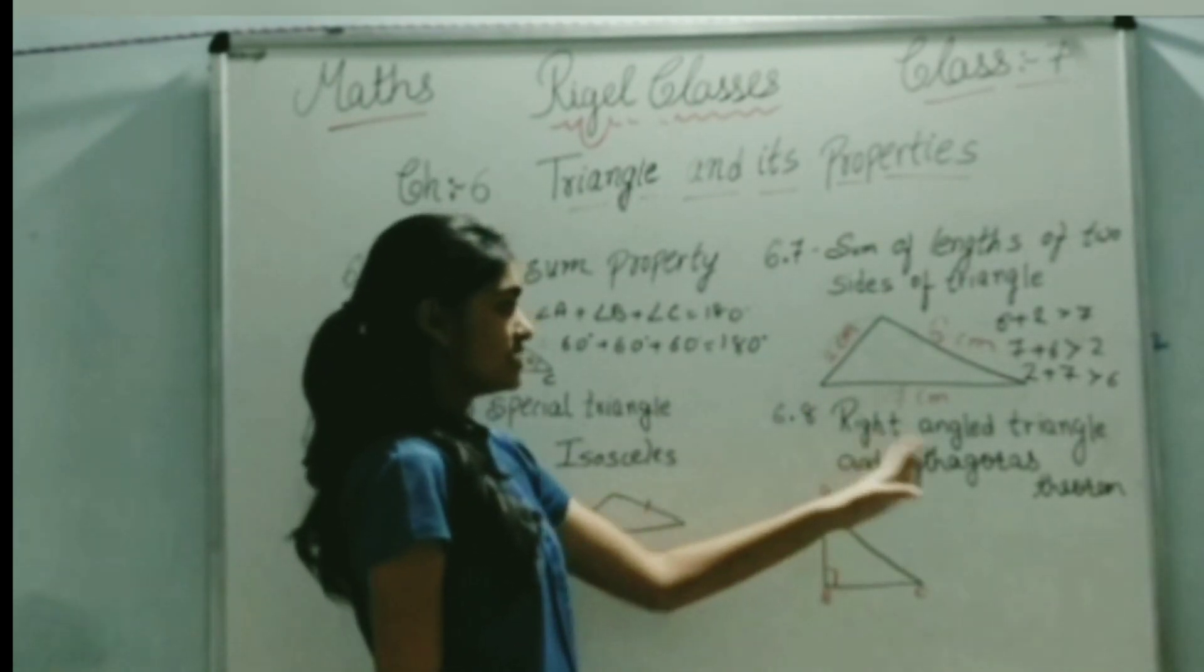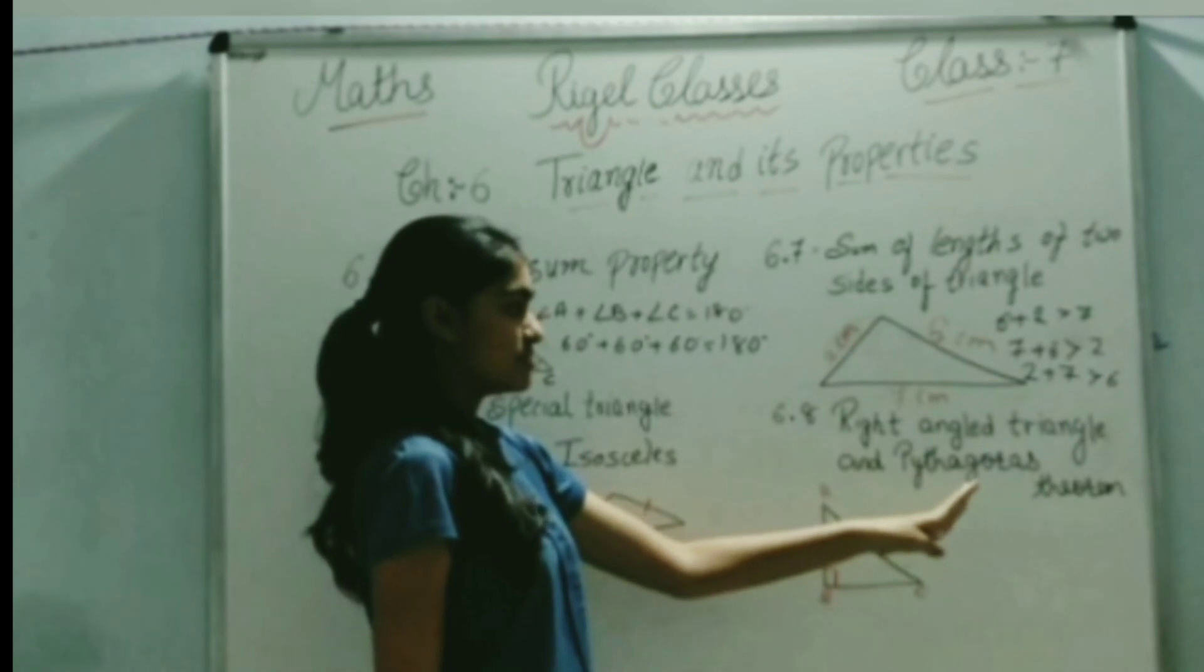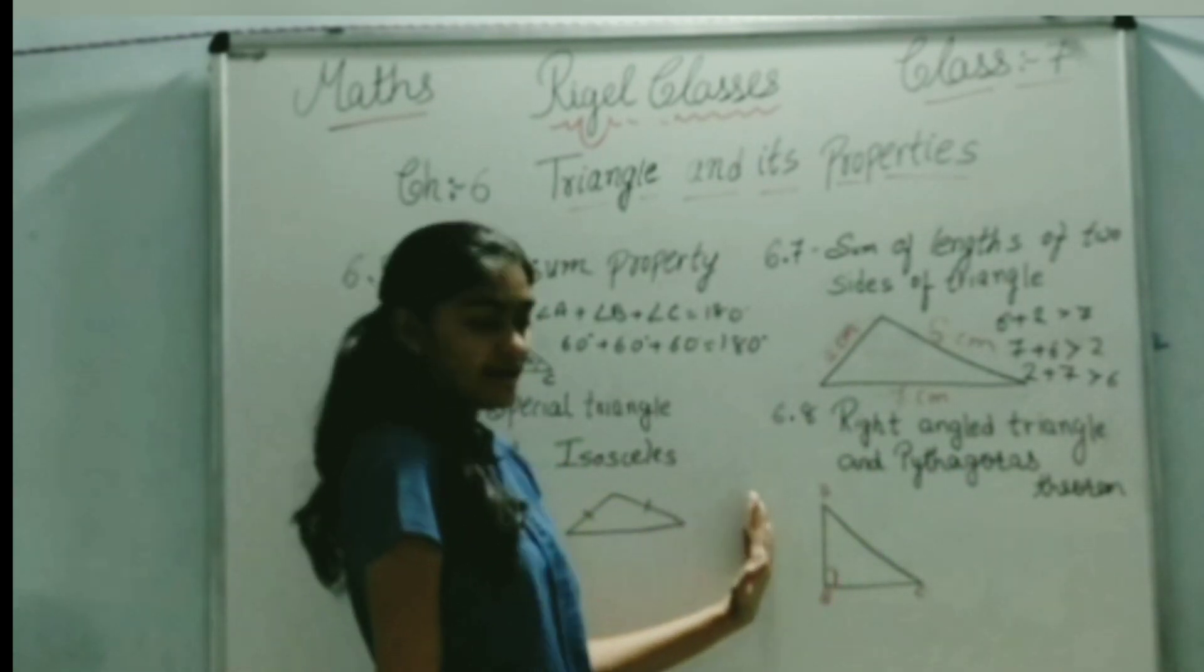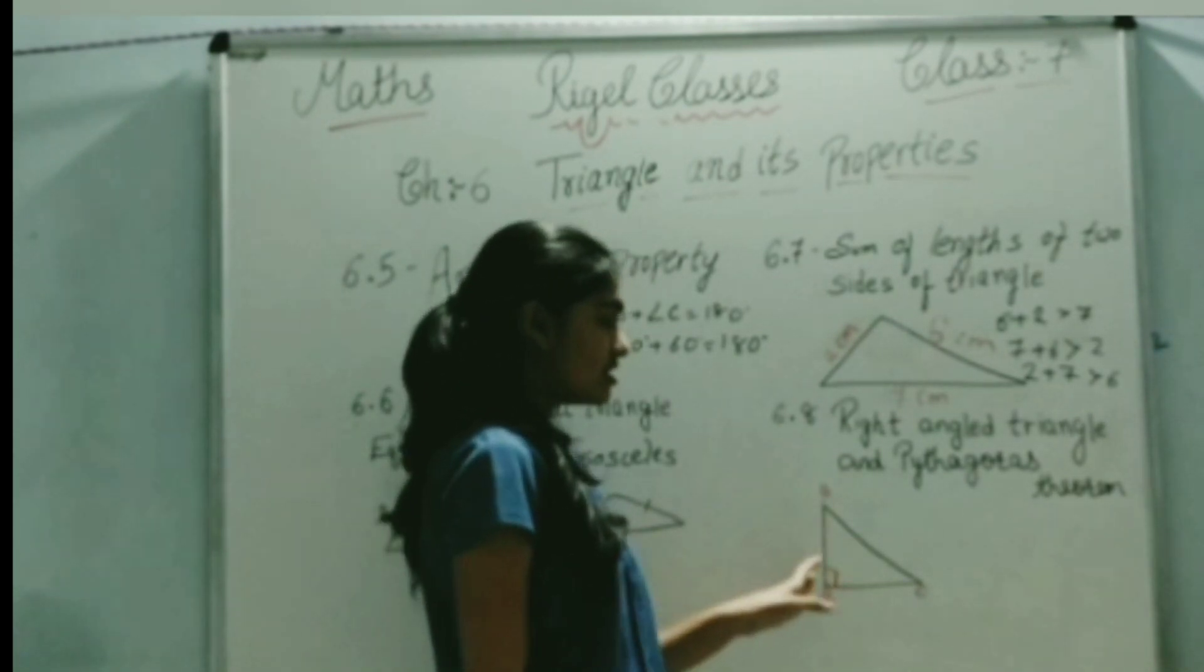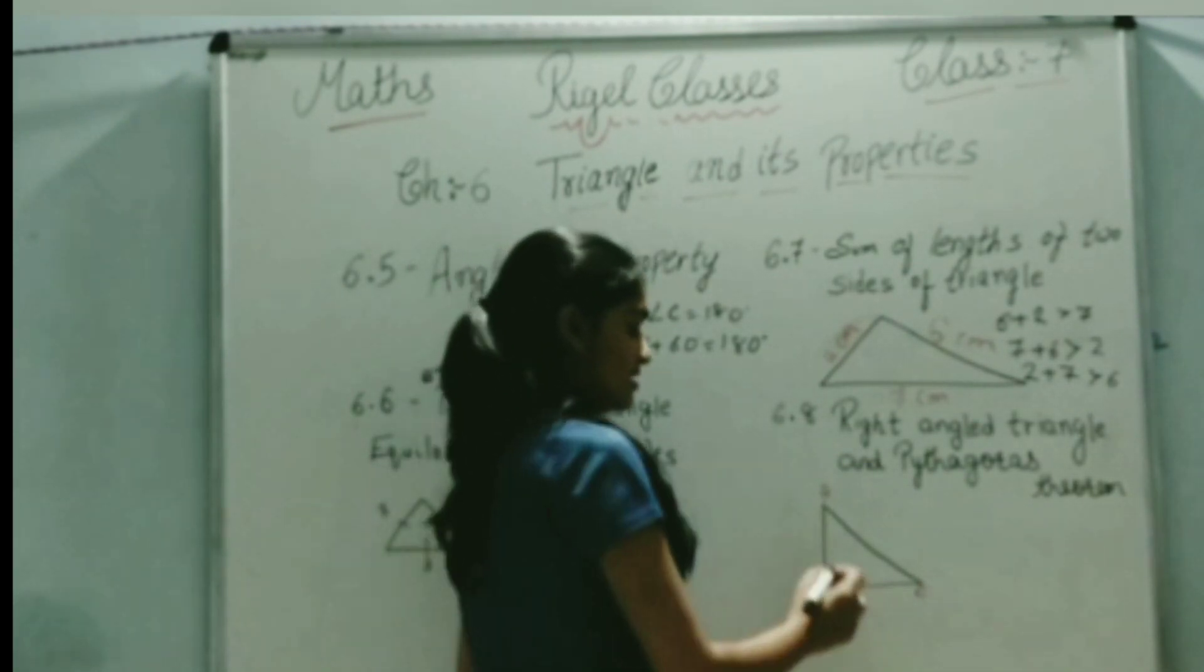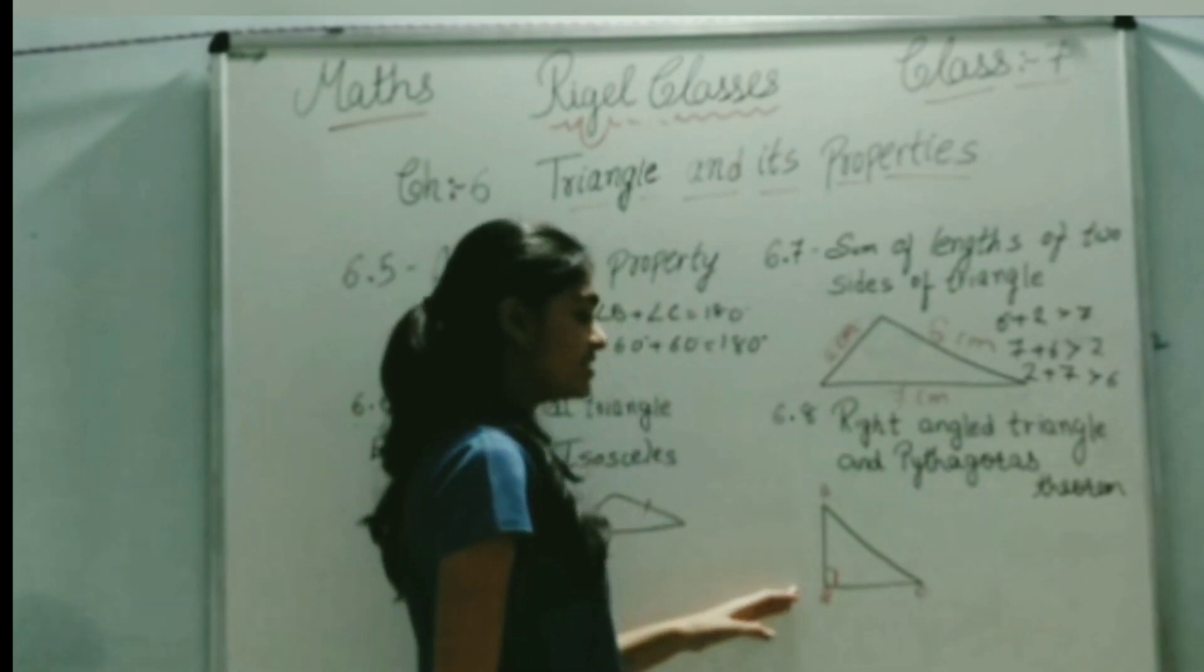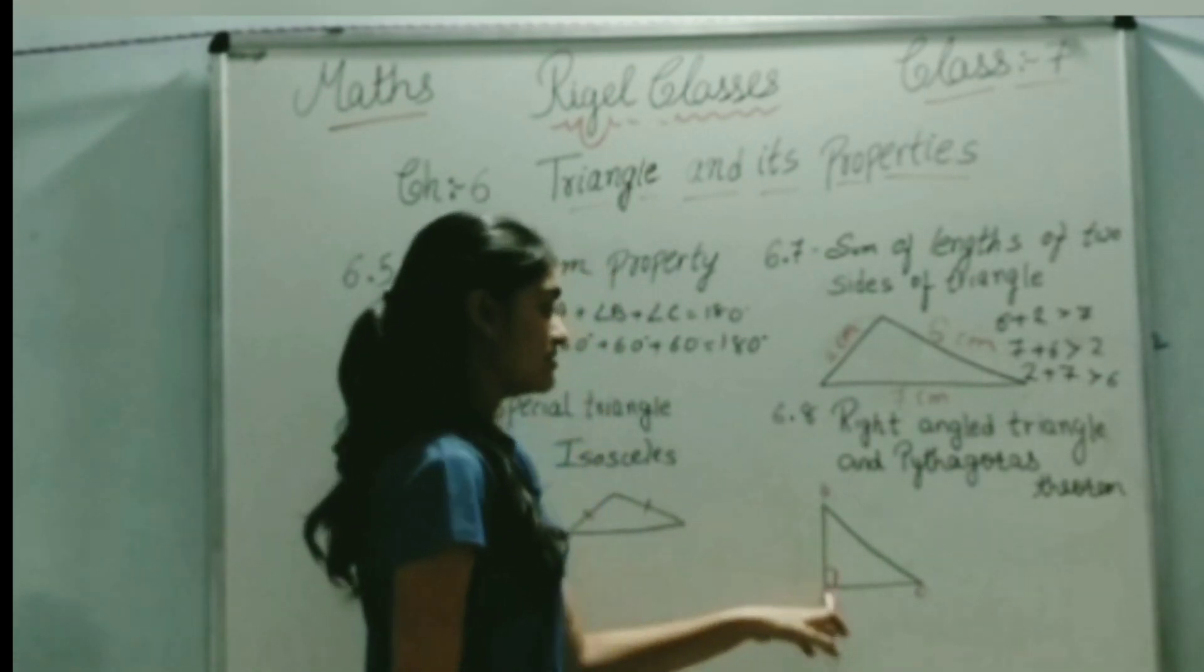Next we will see right angle triangles and Pythagoras theorem. What is a right angle triangle? Any triangle which has at least one 90 degree angle is called a right angle triangle. Here, as we can see, angle B is 90 degrees, so it is a right angle triangle.